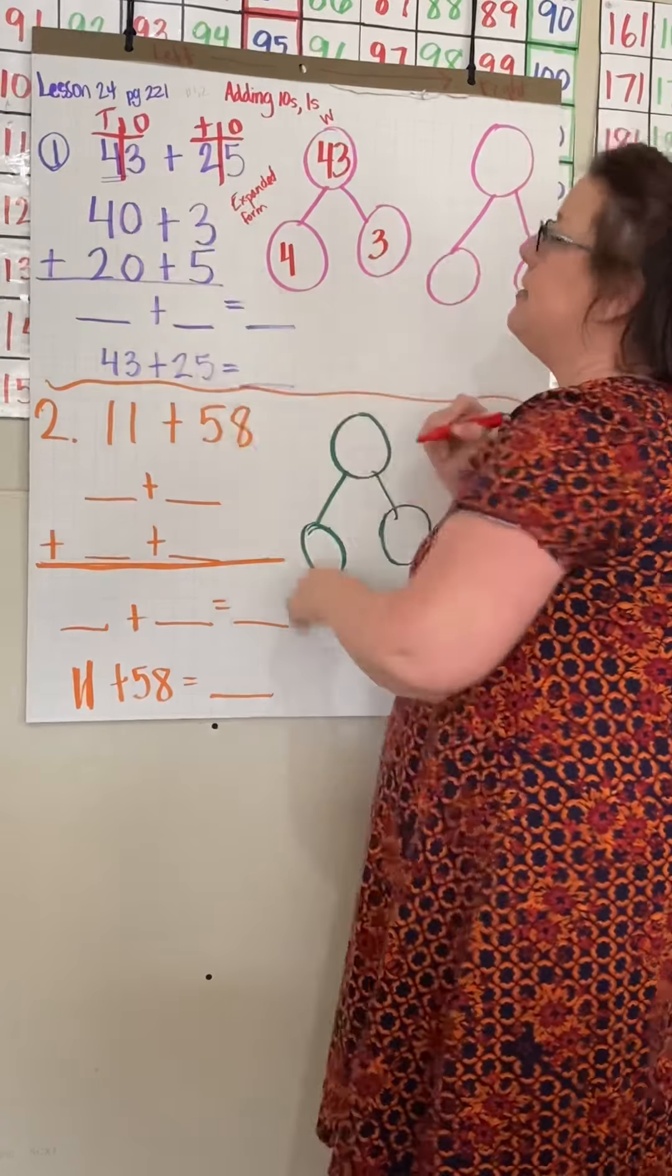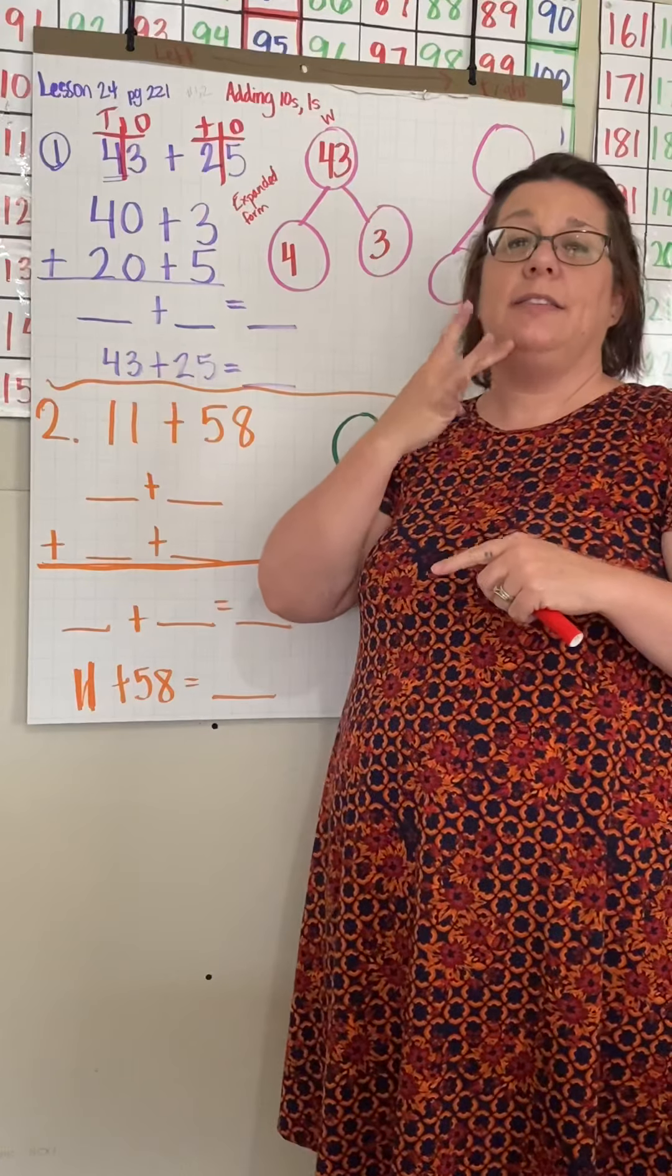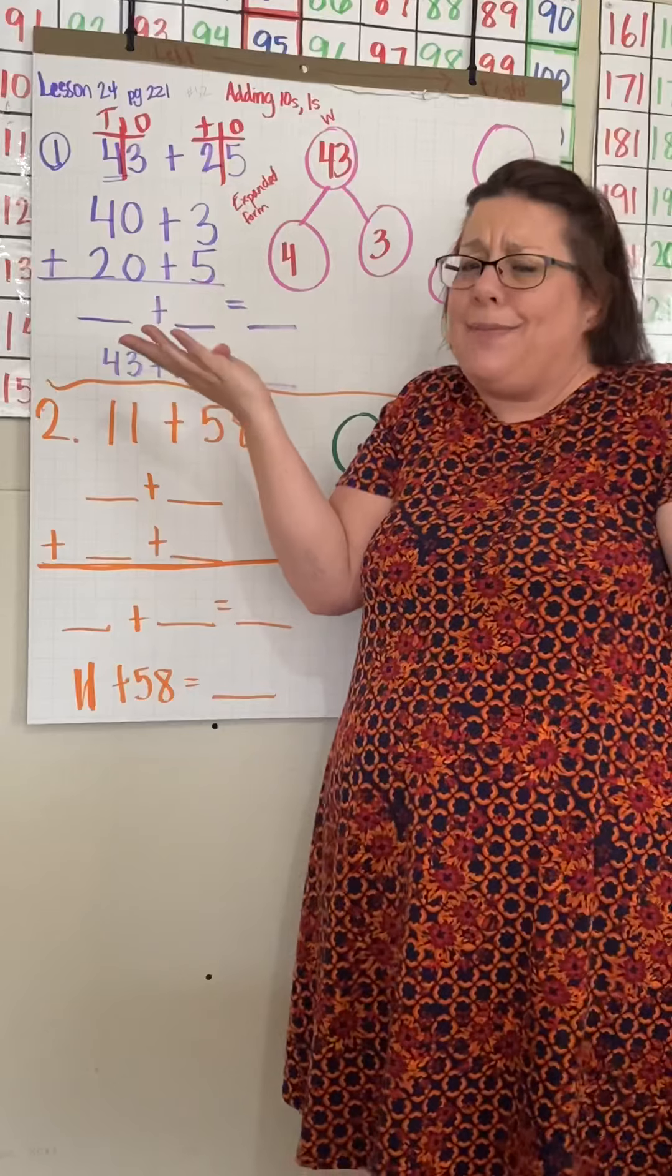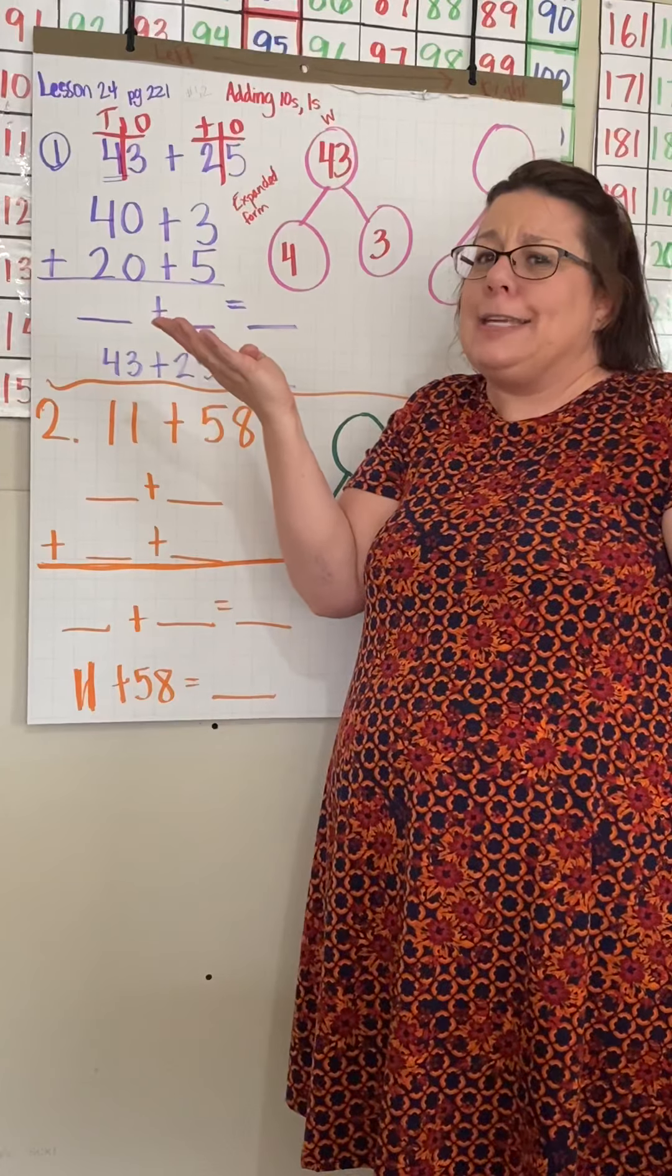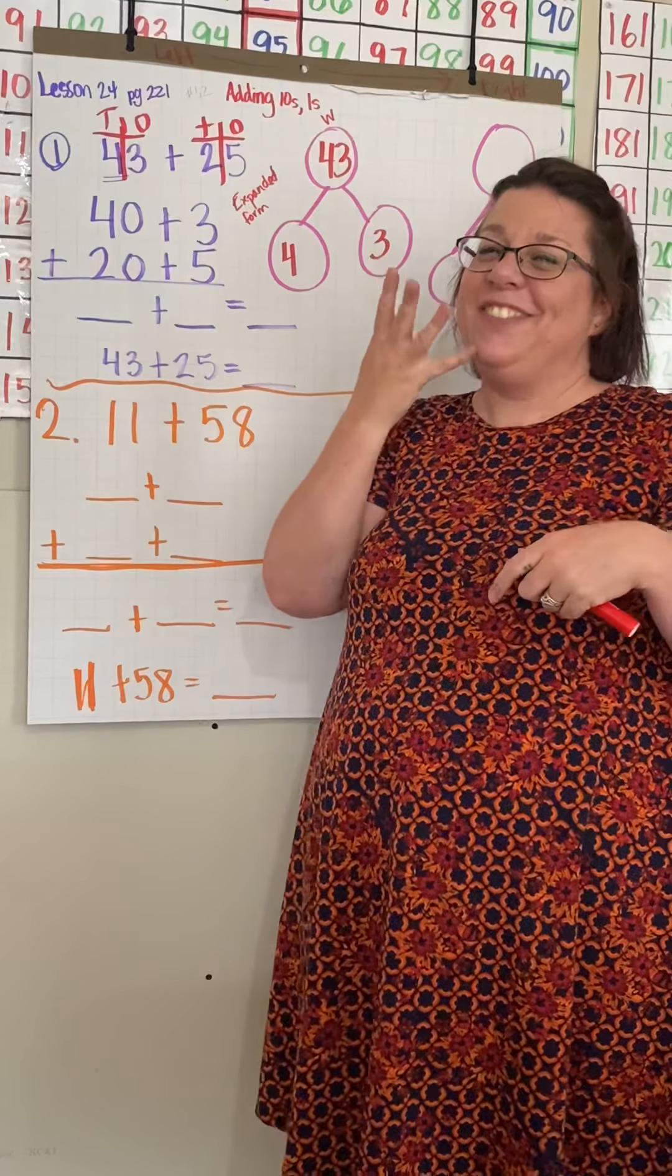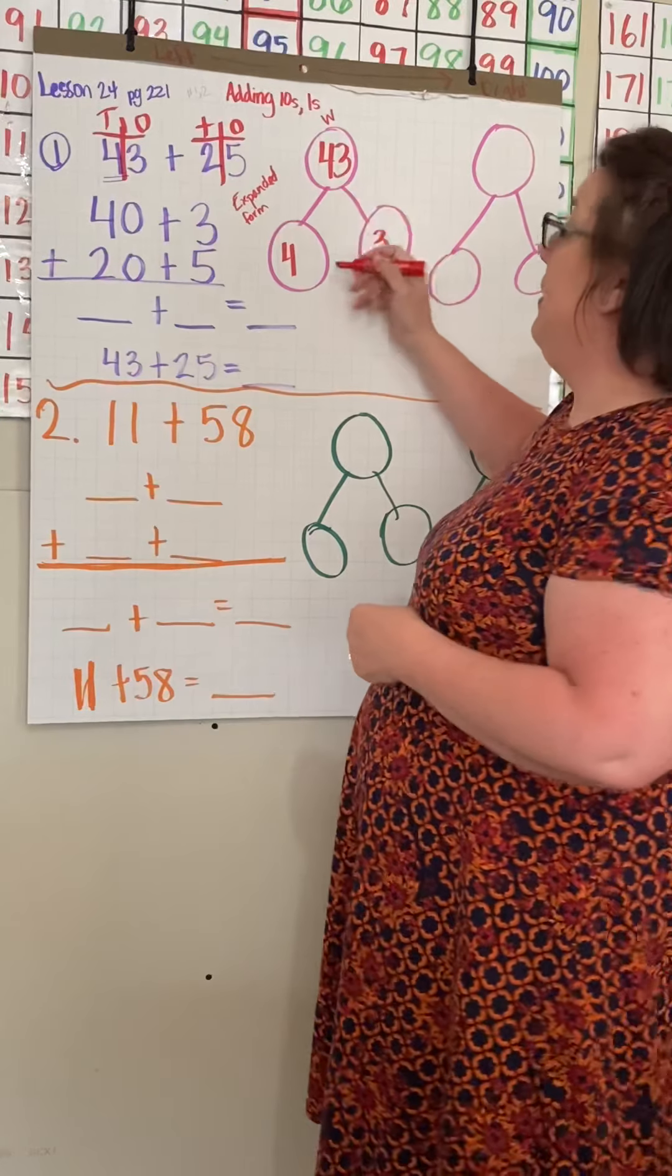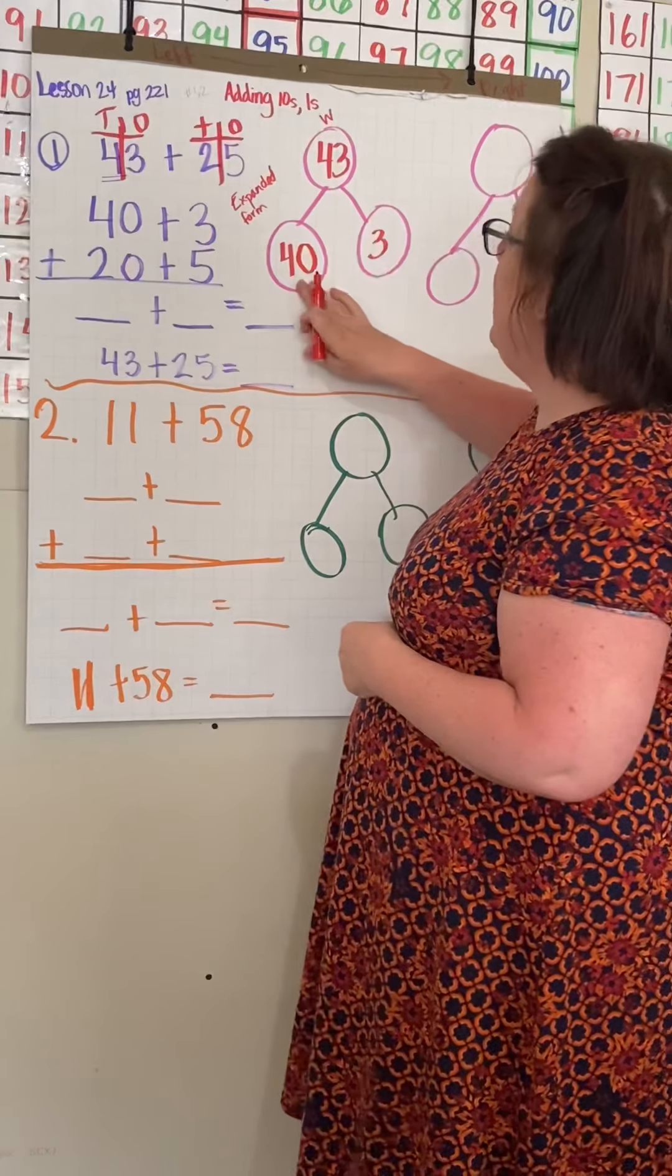If we have four tens, we need to count by tens. So if we have four tens, let's count. One ten, two tens, three tens, four tens. Let's count by tens. Ten, twenty, thirty, forty. So I can't write four right here because four plus three is seven. That is not a total of 43. We have 40 plus three.